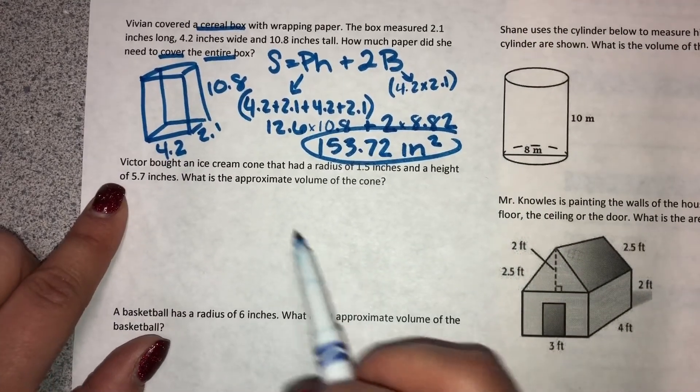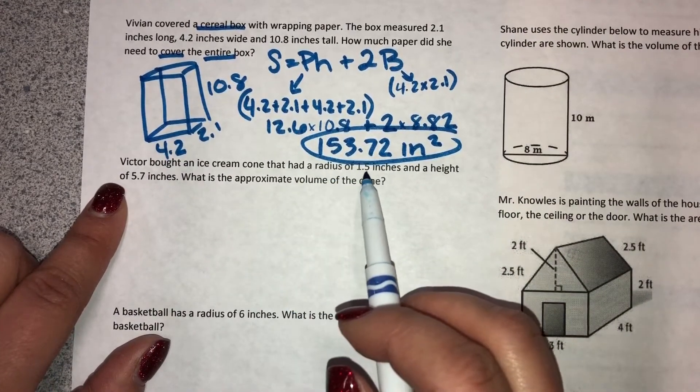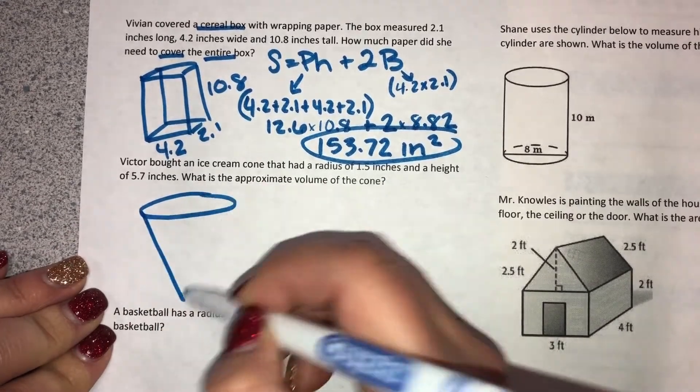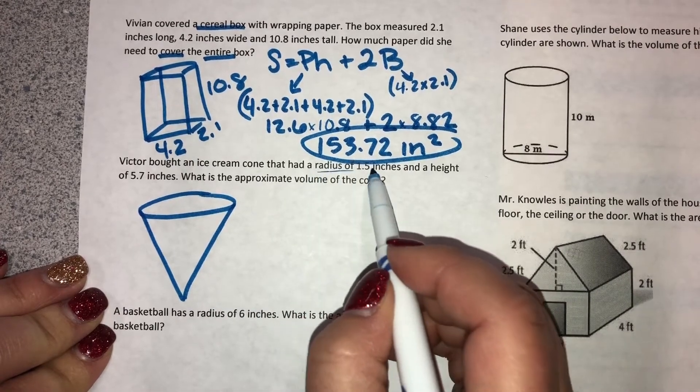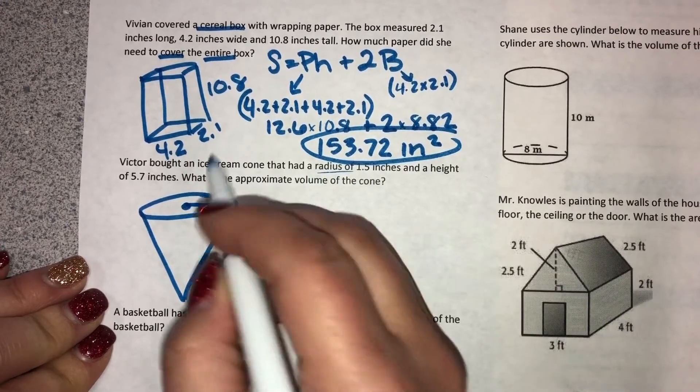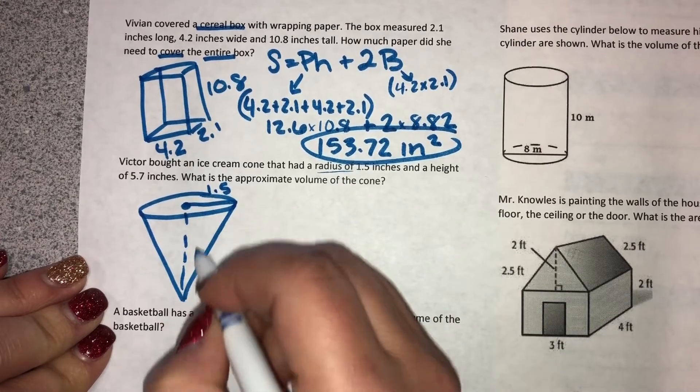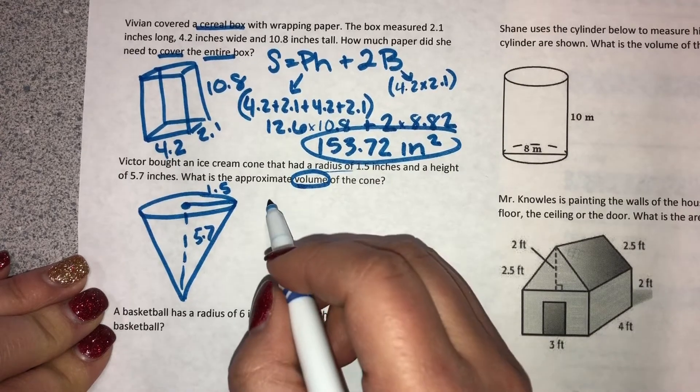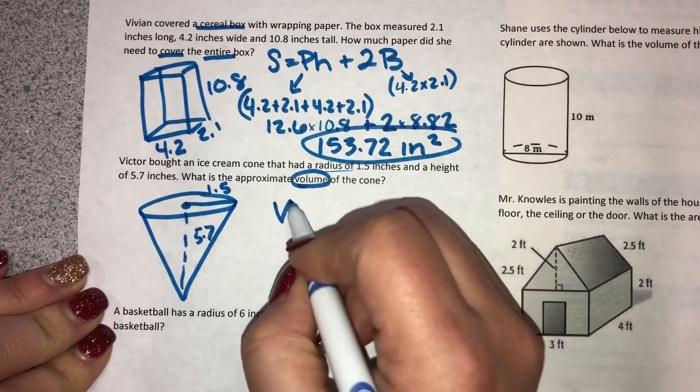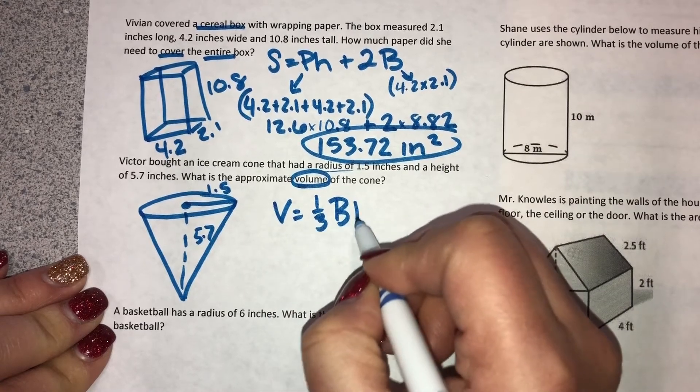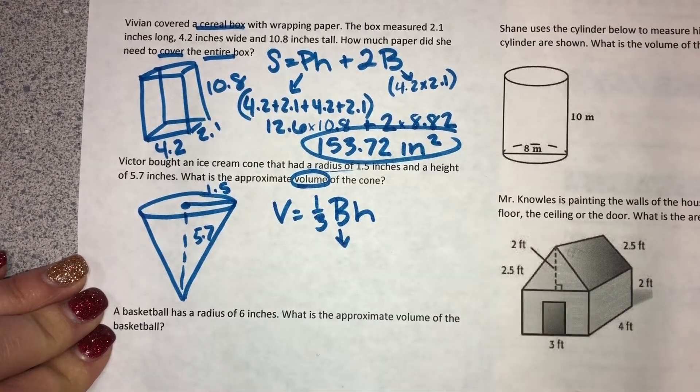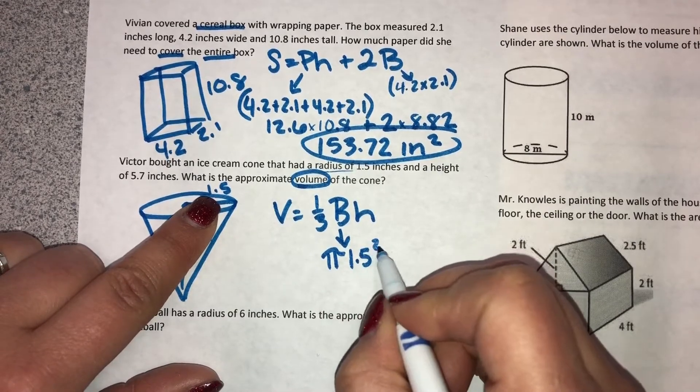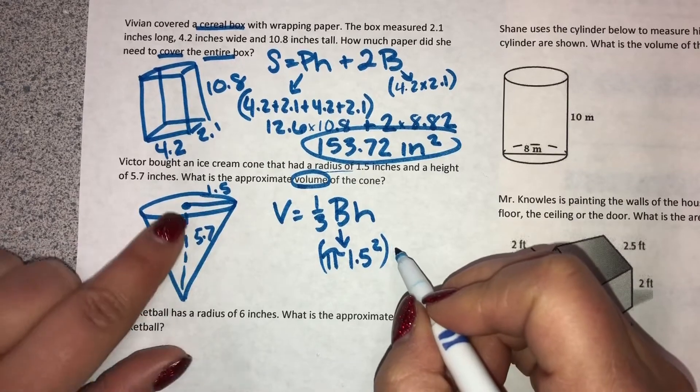Next one. Victor bought an ice cream cone that had a radius of 1.5 inches and a height of 5.7. So I'm drawing a cone and labeling the parts. Radius of 1.5 - middle to edge is 1.5. Height is 5.7. And then it says volume of the cone. So I go to my formula chart. V equals 1 third BH. Capital B means I have to calculate something: pi R squared. So do that, times the height, times 1 third.